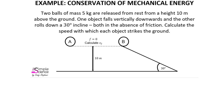An example of the conservation of mechanical energy can be seen here with two separate objects. Both are released from a height of 10 meters above the ground. One object falls vertically downward that 10 meters to the ground. The other object is on an incline at 30 degrees and will roll down that incline, ultimately having traveled 10 meters downward but far further along the incline. We are asked, given that friction equals zero, to calculate the velocity of each object when they reach the bottom.